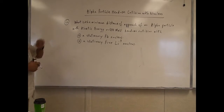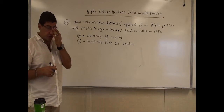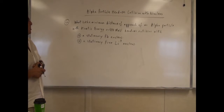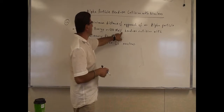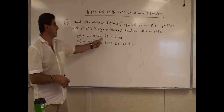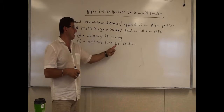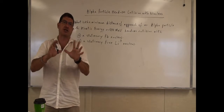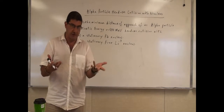Welcome back. Now we're going to do a problem called alpha particle head-on collision with nucleus. The question asks: what is the minimum distance of approach of an alpha particle with kinetic energy 0.40 mega electron volts if it's going to come head-on collision with a stationary lead nucleus and a stationary lithium-7 nucleus? We're going to see that these two questions are a bit different.